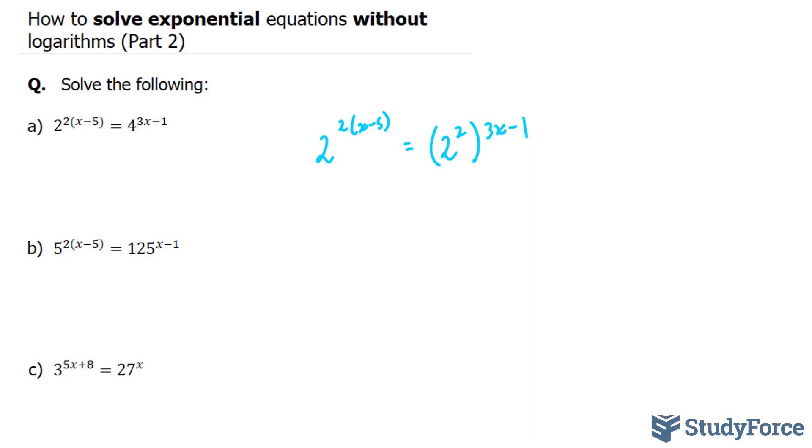Now remember, the power of a power rule from the law of exponents tells us that if you have a power to a power, these two will multiply together. So what we have right now is 2 to the power of 2x minus 5. And on the right side, we have 2 to the power of 2 bracket 3x minus 1.